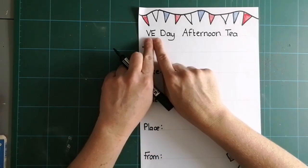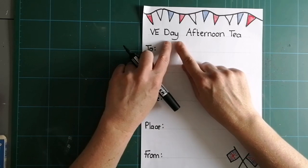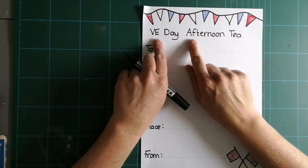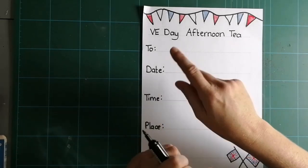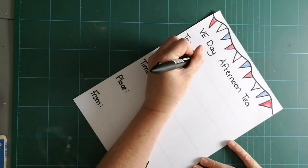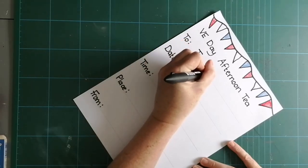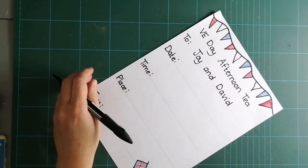Now, VE Day has got capital letters because it's the name of a special day. And because this is an event, my afternoon tea has got capital letters as well. And so, I'm going to send this to, and their names are Joy and David. There we go.